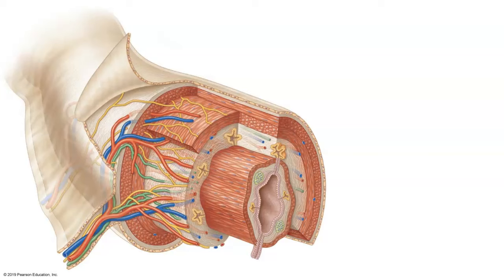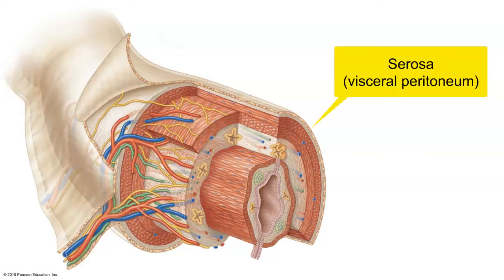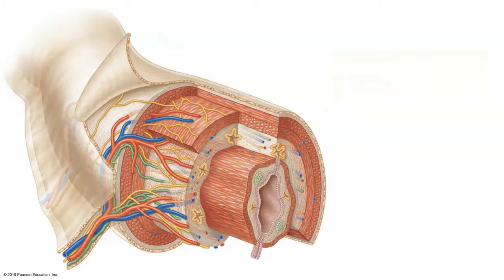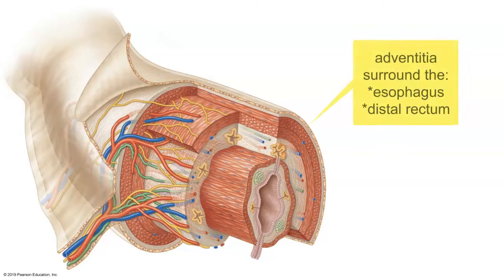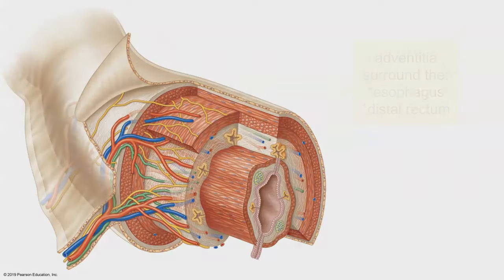The outermost portion is known as the serosa. The serosa is the visceral peritoneum — a serous membrane found inside the abdominal and pelvic cavity. Outside of that, for instance surrounding the esophagus or surrounding the distal rectum, it's known as the adventitia.